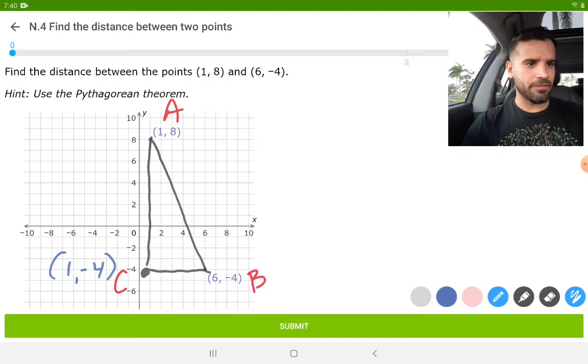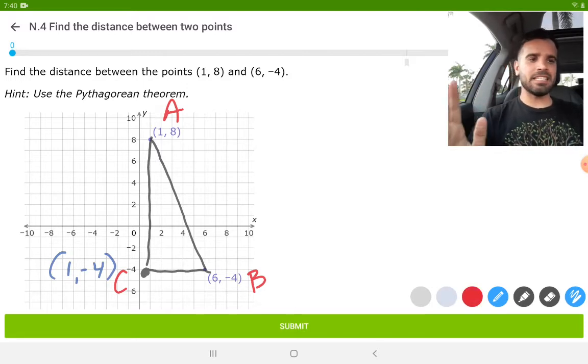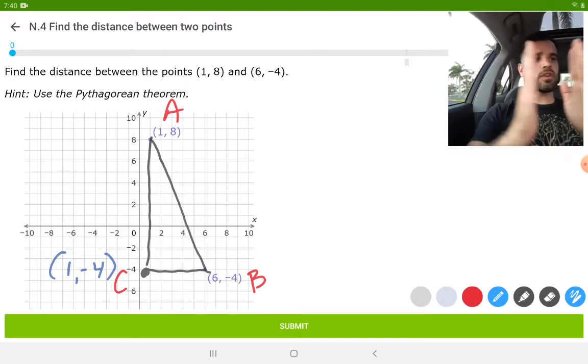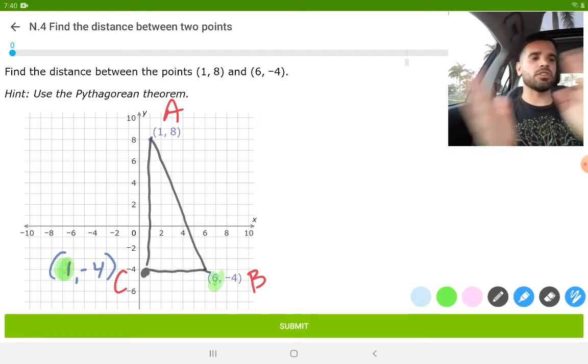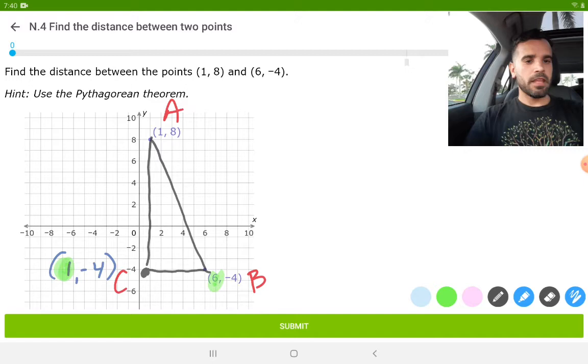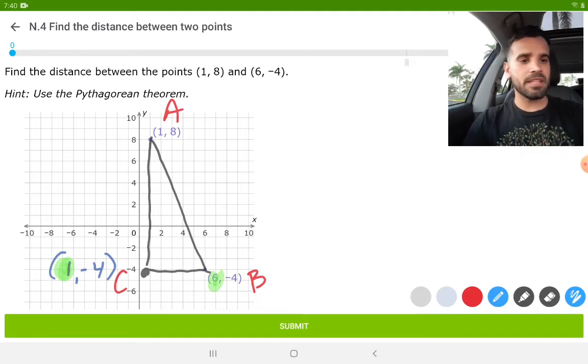We'll find the distance from C to B. If you notice, that's a horizontal distance, just a side to side distance. So we're going to use our X values because our X values represent a horizontal shift. The distance between the number one and the number six is going to be five units. So the distance from C to B is five.